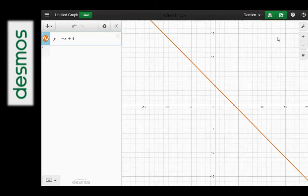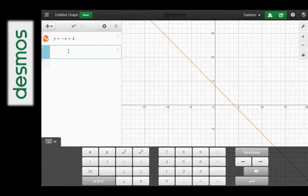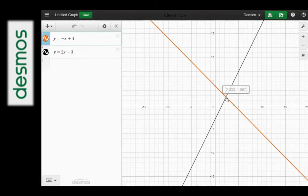You can easily zoom in and zoom out and you can also enter multiple functions. So in this case I'm going to enter a second equation for a straight line and you can see that the two straight lines intersect at a point and Desmos will actually allow you to find that point rather than having to solve the simultaneous equations.